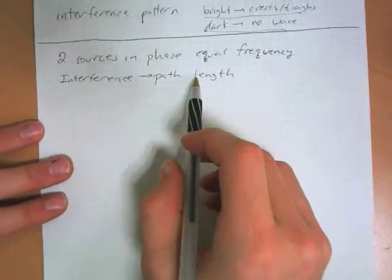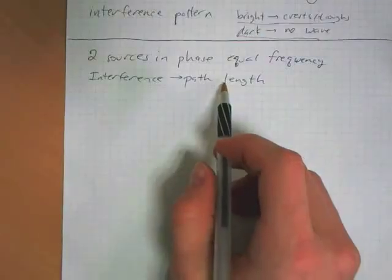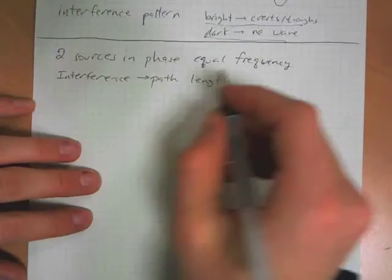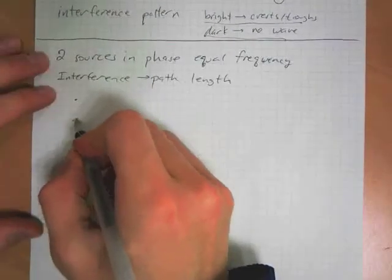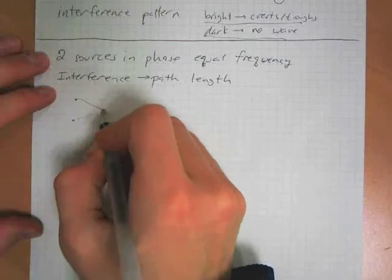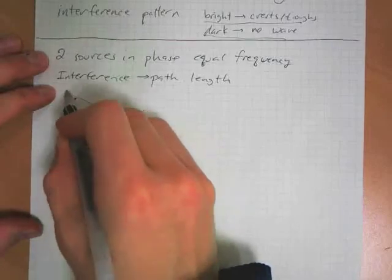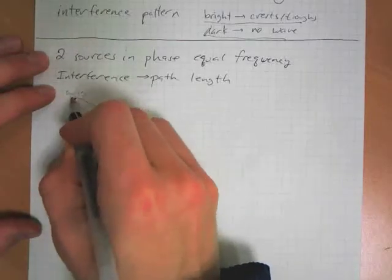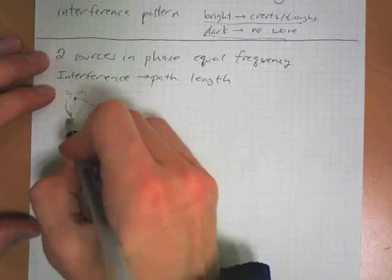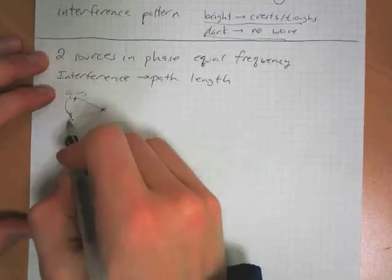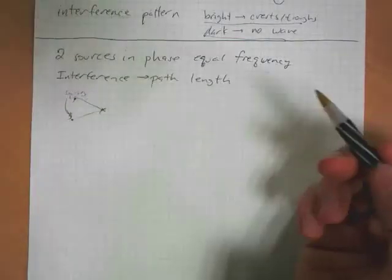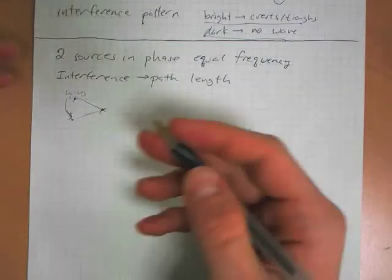If a wave is traveling, you get your two sources, and if a wave is traveling the same distance to get to some other point, these are your sources, and our waves are traveling the same distance to get to a point, then they're going to be in phase, so they'll interfere constructively.